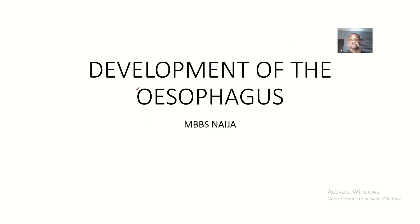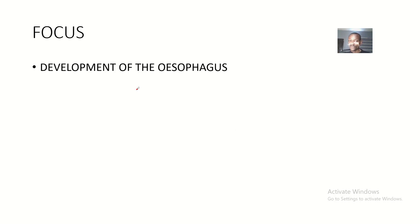Up next we'll be talking about the development of the esophagus, which is a story you must know to completely understand tracheoesophageal fistula. You should have good knowledge of esophagus development because any anomalies in that development are what lead to tracheoesophageal fistula. Our focus today is the development of the esophagus, and it's quite a straightforward lecture.